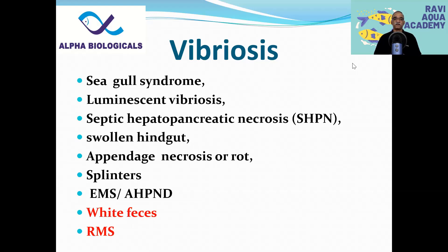For example: systemic Vibriosis or Seagull syndrome; luminescent Vibriosis, most common in shrimp hatcheries and very rarely found in shrimp farming; septic hepatopancreatic necrosis; Swellenheim gut syndrome, which is common in monodon, especially tigers; appendage necrosis or rot disease such as tail rot, antenna cut, and antenna scale rot. EMS and AHPND — early mortality syndrome and acute hepatopancreatic necrotic disease — as well as white feces and running mortality syndrome. In these last two cases we don't know the exact causative agent, but Vibrio was identified as one of the reasons, which is why we cover them in this presentation.